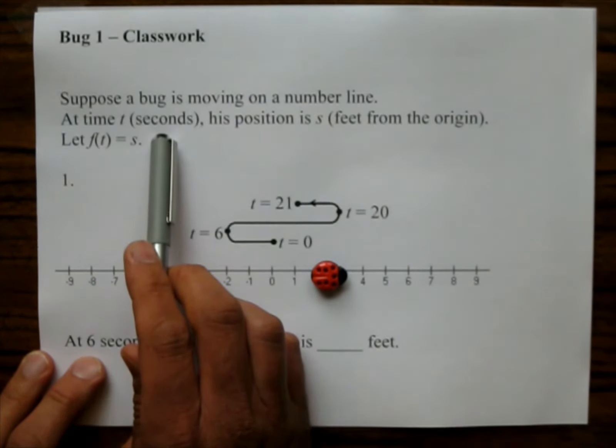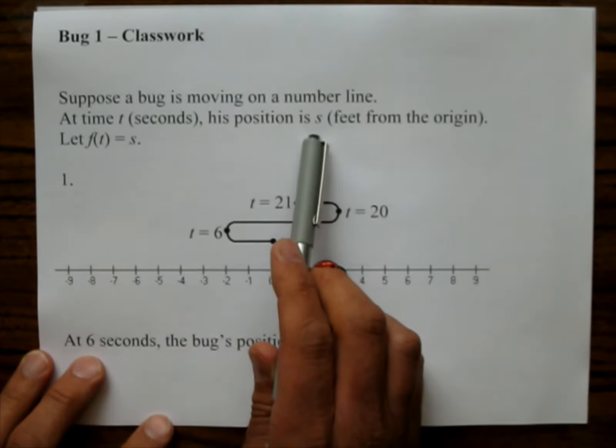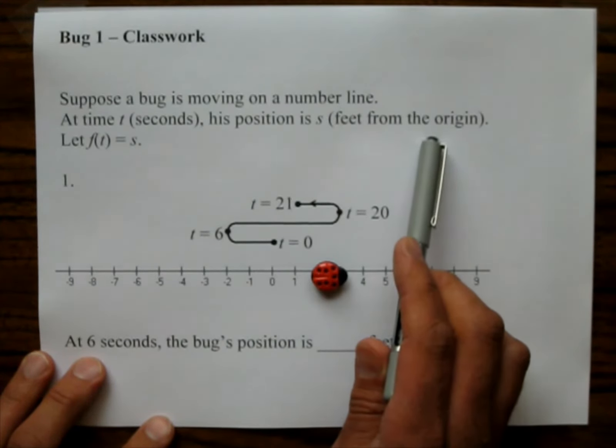So all the bug is going to do is he's going to just be walking, maybe to the right, and then maybe he'll be backing up and going back to the right again. That's all he's going to be doing, just walking back and forth on the number line. At time t, which is measured in seconds, his position is s.